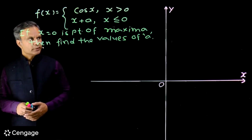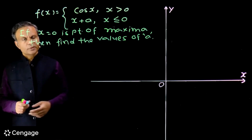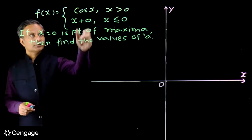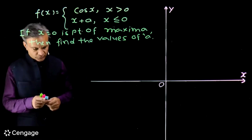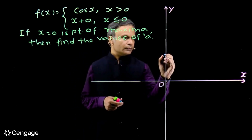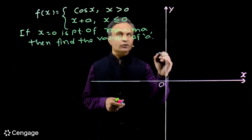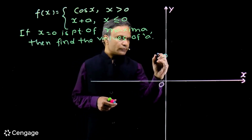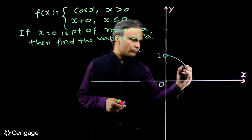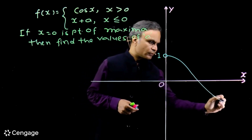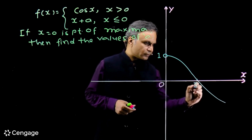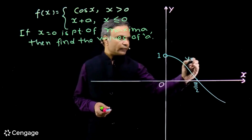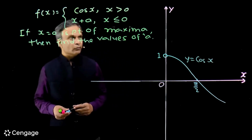Let's use a graphical approach to solve this. For x > 0 we have cos(x); note that 0 is not in the domain of this branch. The graph of cos(x) starts just to the right of 0 with value approaching 1 (open circle at x=0), and intersects the x-axis at π/2.